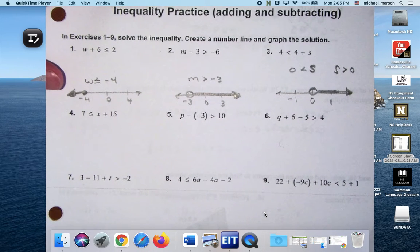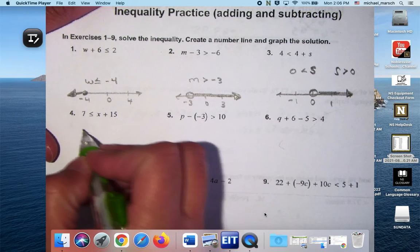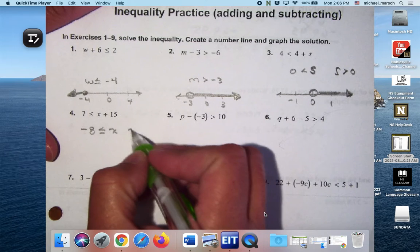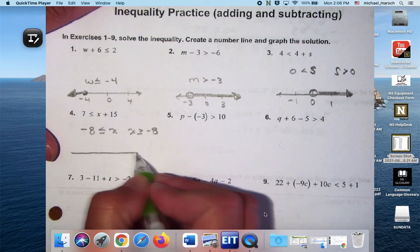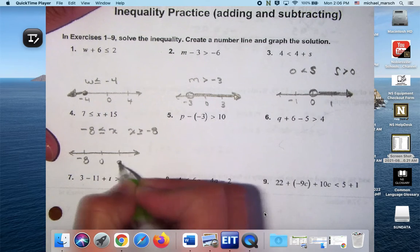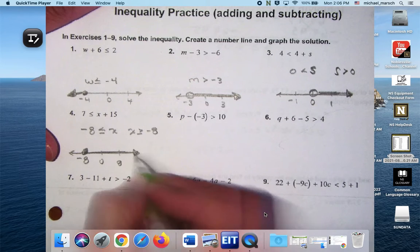How are we doing? Thumbs up? Okay. Number 4, you would get negative 8 is less than or equal to X, which I would then rewrite as X is greater than or equal to negative 8, just so I can use that arrow trick we talked about.